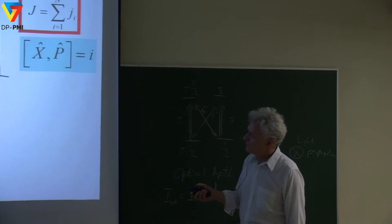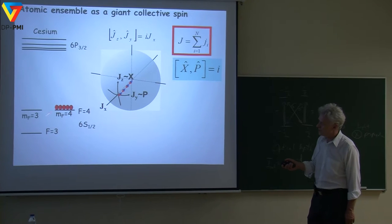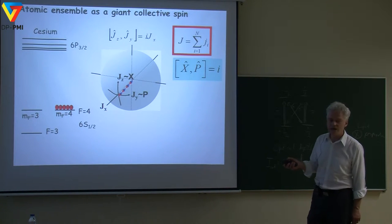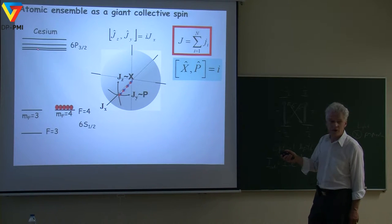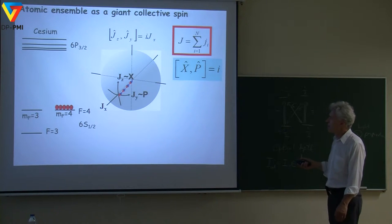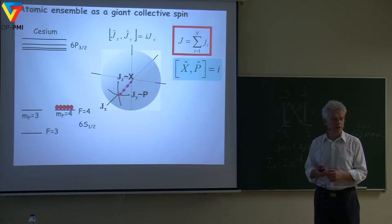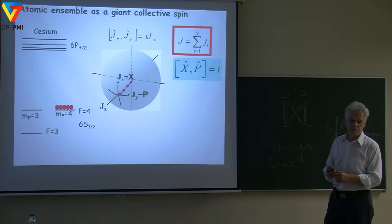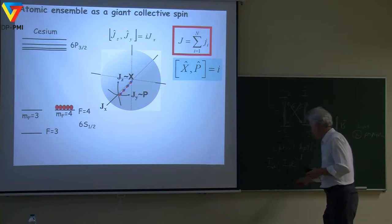We have cesium initiated in one of the substates. This is the optical transition at roughly 3×10¹⁴ Hz. The splitting between the ground hyperfine levels is about 10 GHz — certainly out of scale — but it doesn't matter. In atomic and optical physics, as well as in solid-state physics, the widespread way of presenting spins is on the so-called Bloch sphere.